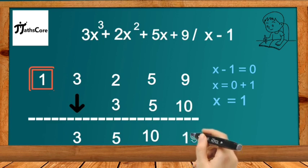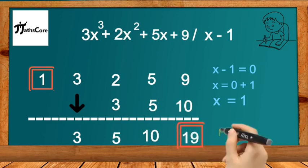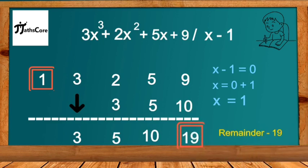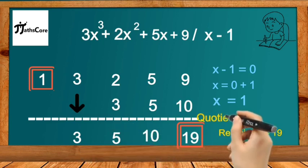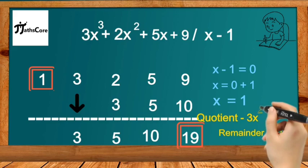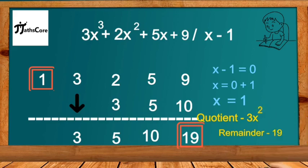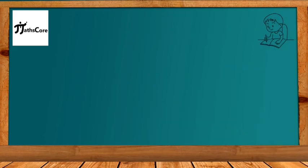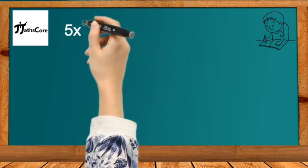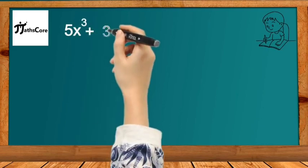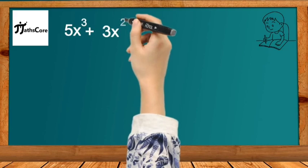This last number 19 is the remainder, and we got the quotient in 3 terms. Since there are 3 terms, the highest degree of the variable will be 2, so the quotient is 3x² + 5x + 10. Let's take one more example: 5x³ + 3x² + 2x + 10 divided by x - 2.